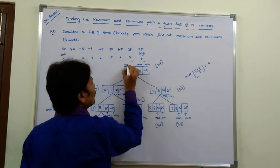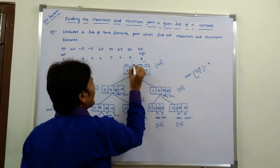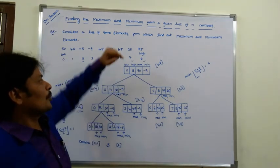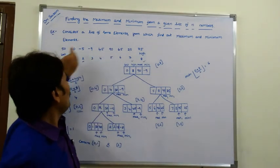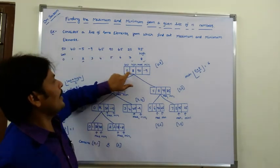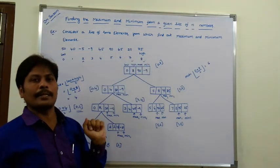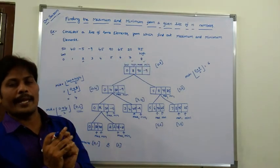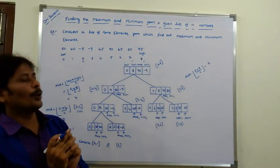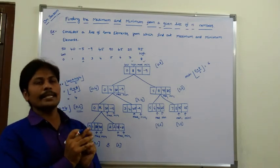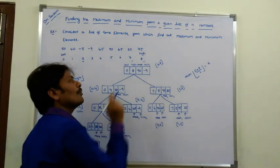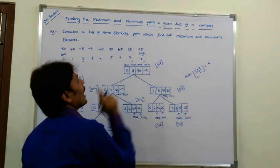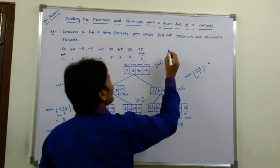The final list has low value = 0 and high value = 8, covering the full array from index 0 to 8. The overall maximum value is 90 and the minimum value is -9.